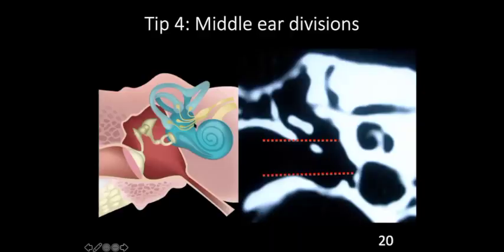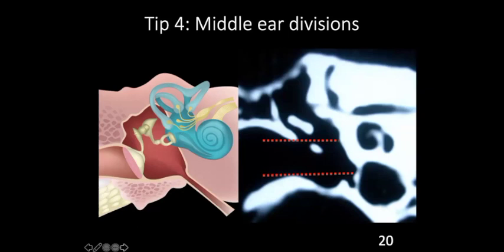Coming to middle ear divisions — we divide the middle ear into three parts: epitympanum, mesotympanum, and hypotympanum, based on two imaginary lines passing through the roof and floor of the external auditory canal. On an axial section, if you suddenly look at a particular film: ideally study from superior to inferior. If you see the ossicles in an ice cone appearance — specifically the head of the malleus and body of the incus — that means you are in the epitympanum.